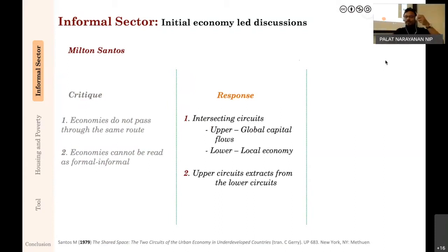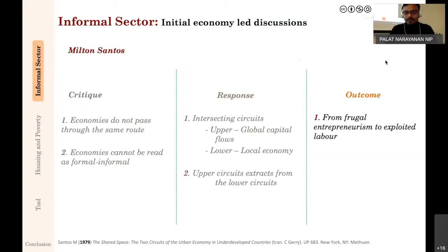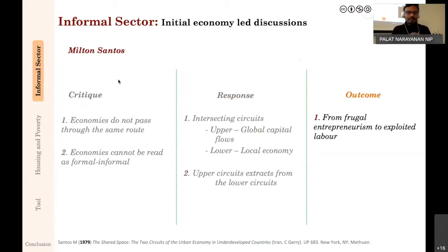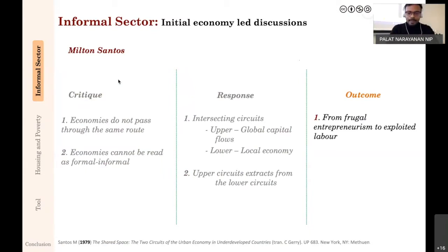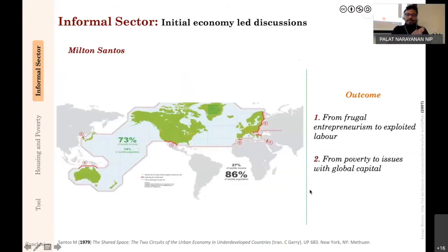Santos conceptualized two levels of economy: global capital flows and the lower local economy. The global capital flow extracts money from the lower circuits. This completely shifted the earlier romanticization of frugal entrepreneurialism—'look at these poor people, so entrepreneurial with minimal resources'—and replaced it with the idea of exploited labour: they are poor because the upper circuit of global capital sucks capital out of the lower economy.